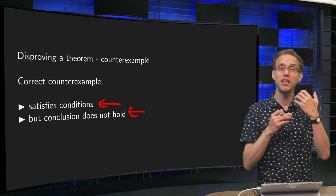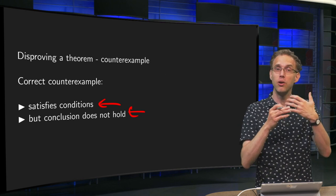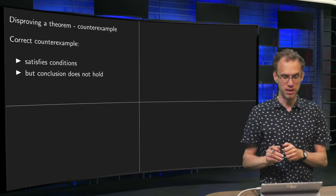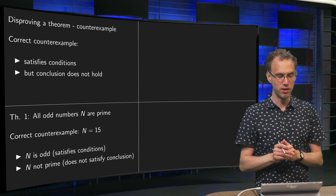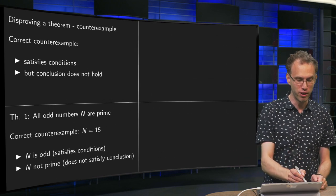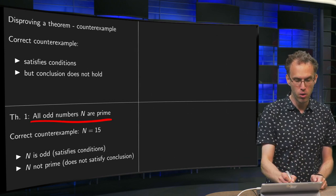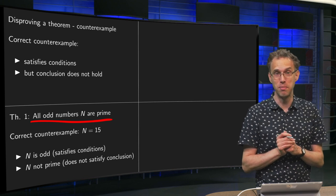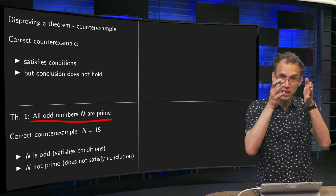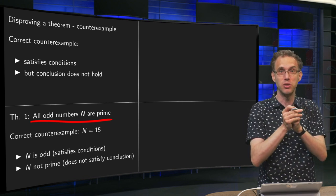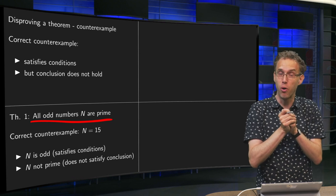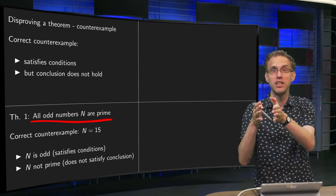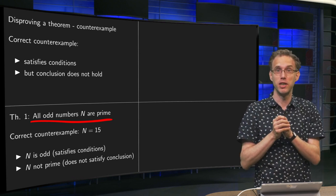Let's take a look at an explicit example, as this may seem a bit abstract. For example, we have the following theorem: all odd numbers n are prime. The condition is that you have some odd number, and the conclusion is that this number is prime.